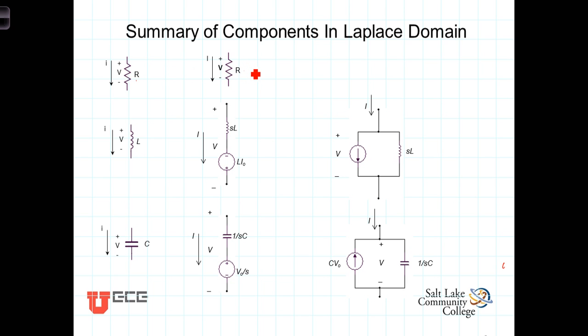With the inductor, with an initial current of I0, we can represent it in either the series form of a series impedance, S times L, and a voltage source equal to or with a value of L times I0, where L is the value of the inductor and I0 is the initial current in the inductor.